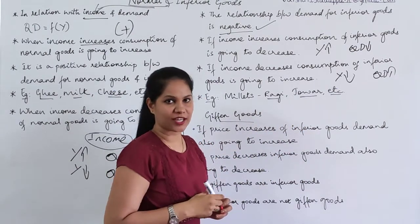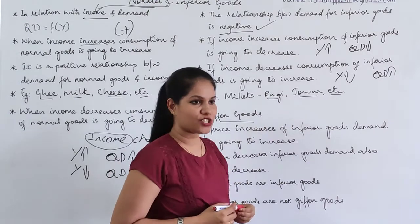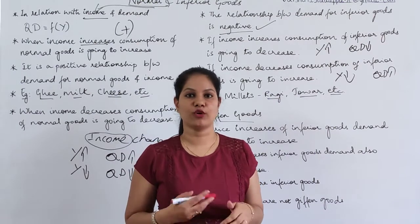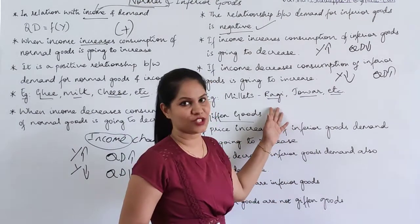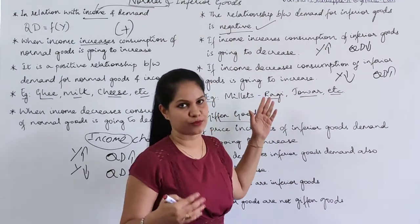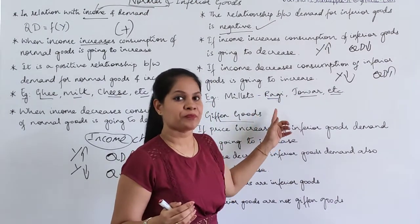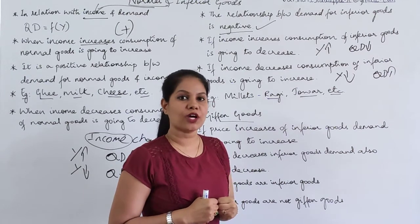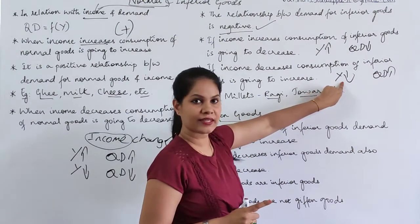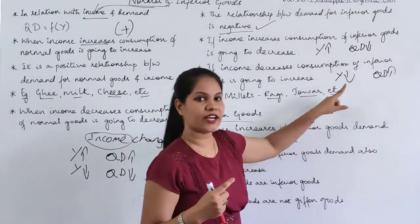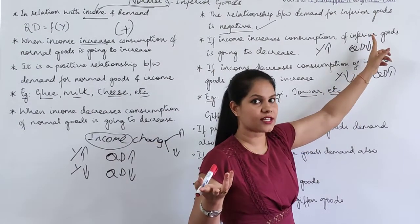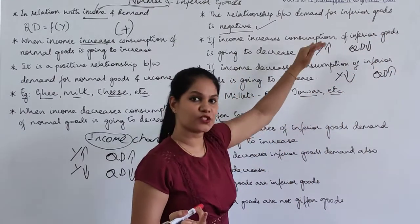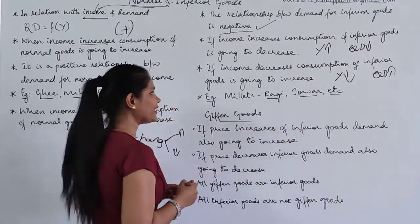Ragi and Johar used to be called poor people's food. Right now we cannot say that because due to sugar and other chronic diseases everybody has started having them, so Ragi and Johar consumption has increased. But in the typical economic sense, Ragi and Johar are demanded mainly by people with lower income. When income increases, they shift their demand to wheat and rice, so quantity demand for Ragi and Johar decreases.